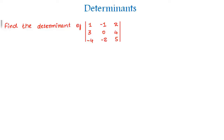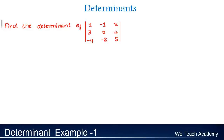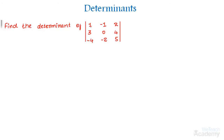Welcome to Verich Academy. In this section we are going to discuss an example under determinants. We need to find the determinant of a 3 by 3 matrix represented in mod. The formula to find the determinant is the sum of the products of elements of the first row with their corresponding cofactors, so we need to find the cofactor of each element in the first row.